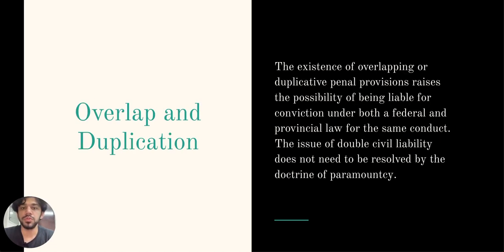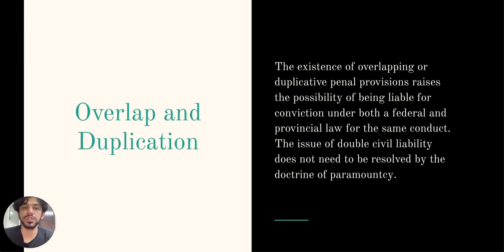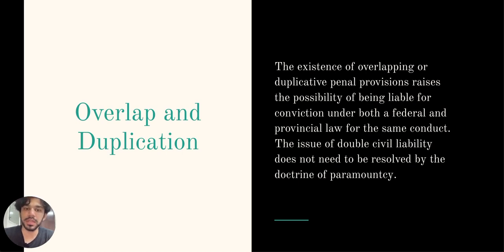When it comes to criminal law, there can be situations where a single action can be seen as a violation of both federal and provincial laws, meaning an individual could potentially face charges under both laws for the same action. This is called overlapping or duplicative penal provisions and it raises issues around double jeopardy. However, the doctrine of paramountcy does not apply in cases of double civil liability and the issue must be resolved through other legal means.